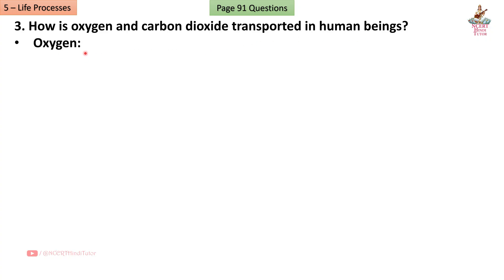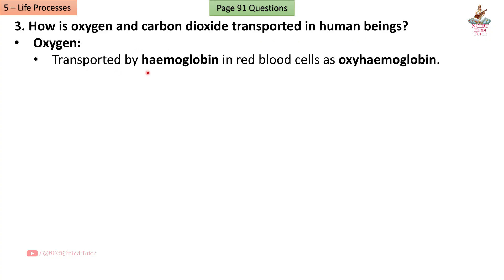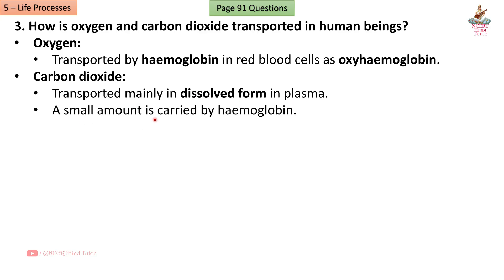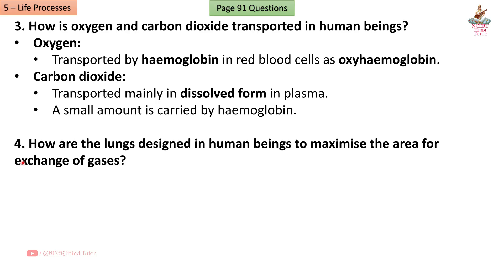Question 3: How are oxygen and carbon dioxide transported in human beings? Answer: Oxygen is transported by hemoglobin in red blood cells as oxy-hemoglobin. Carbon dioxide is transported mainly in dissolved form in plasma; a small amount is also carried by hemoglobin.